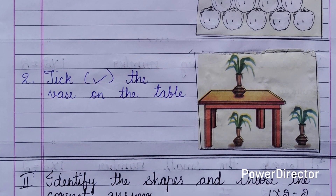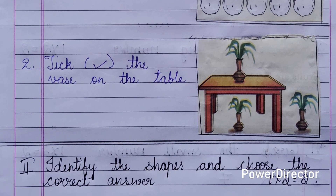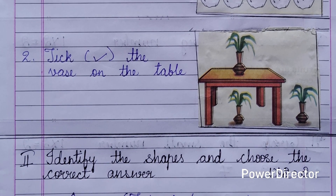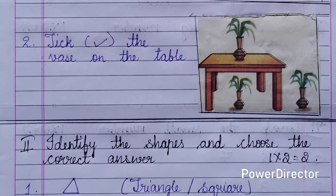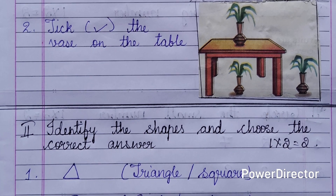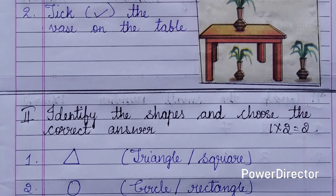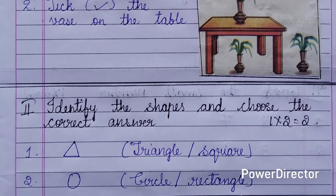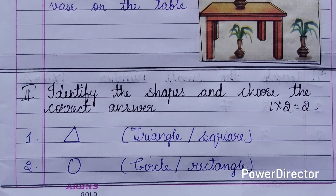Second main: identify the shapes and choose the correct answer. Two questions are there, each question carries one mark, total two marks for this main. I have given two shapes and I have given the options; they have to identify the correct option.